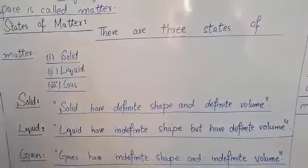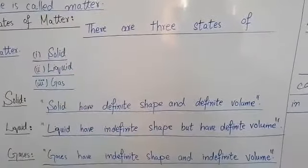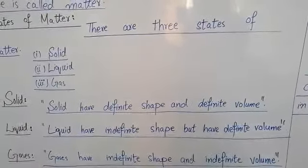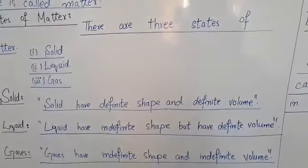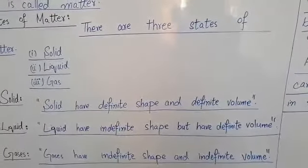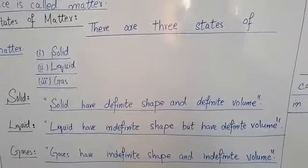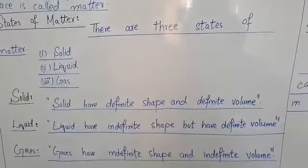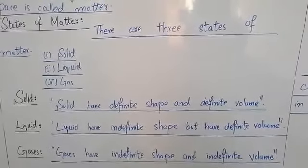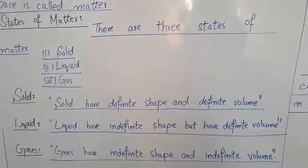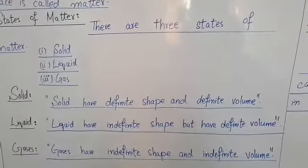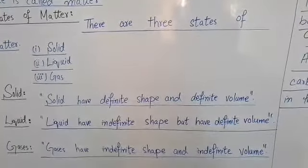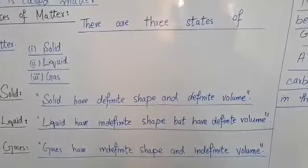Next, we have liquid. Liquids have indefinite shape but have definite volume. If it is liquid, its volume is definite. We cannot change the volume. But its shape is indefinite. How? For example, if you have liquid in a container, in a jug, if you freeze it, then the shape of the jug will come when it freezes. Like this, when you pour the liquid, then you freeze it in a glass, then its shape becomes glass.